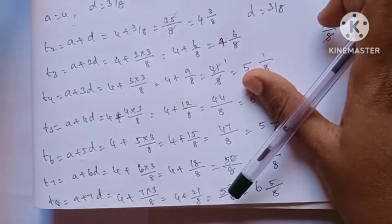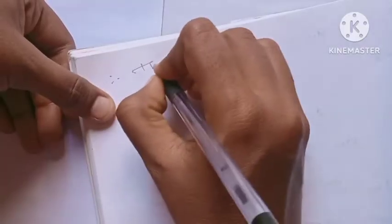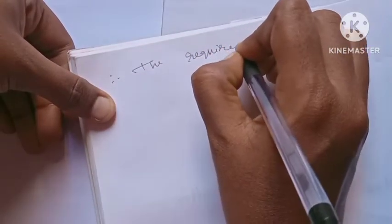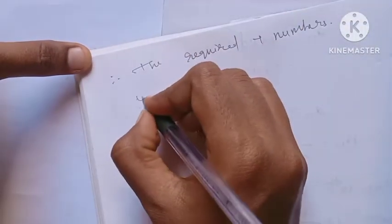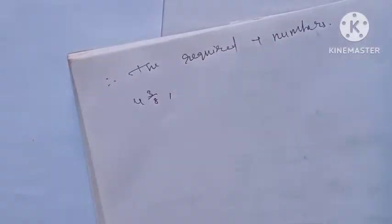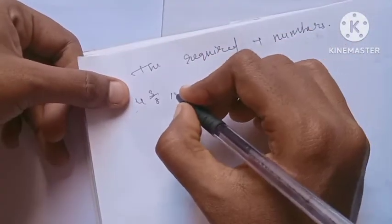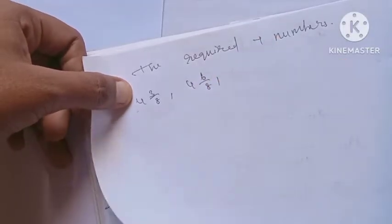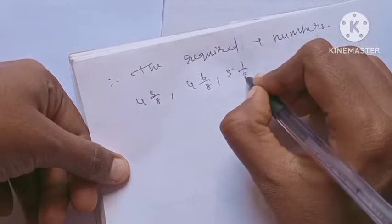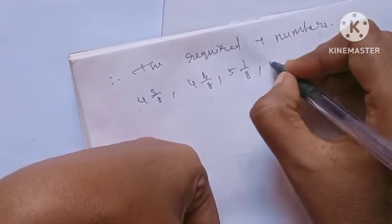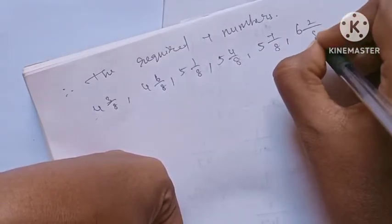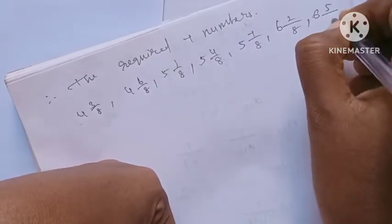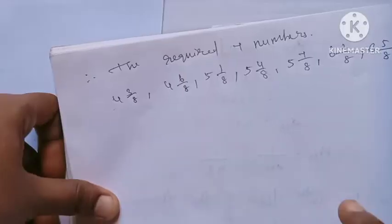You can substitute into the formula and simplify directly. Therefore, the 7 numbers inserted are: 4 and 3/8, 4 and 6/8, 5 and 1/8, 5 and 4/8, 5 and 7/8, 6 and 2/8, 6 and 5/8. This is the AP sequence.